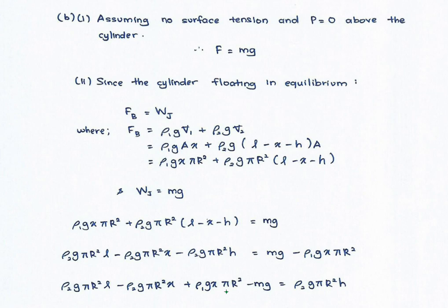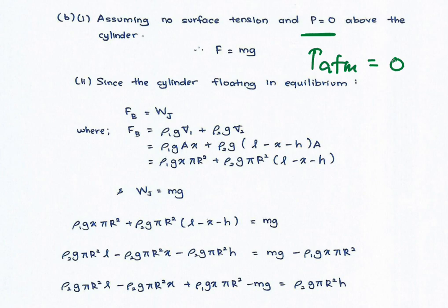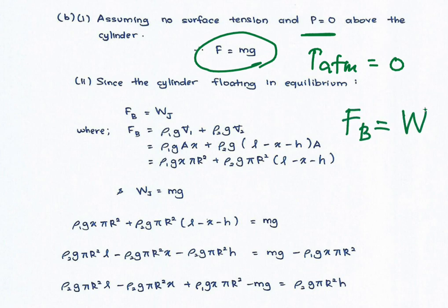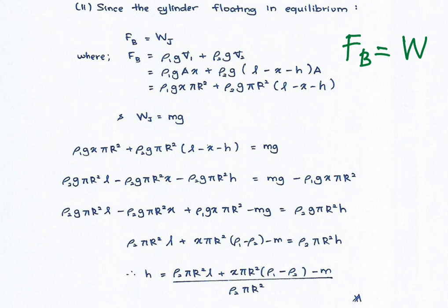This is the answer for question B. Assuming there is no surface tension and pressure above the cylinder is equal to zero — meaning the atmospheric pressure is equal to zero, so the atmospheric gas is not exerting any pressure, and there are no forces acting on the surface. We can neglect the effect of atmospheric pressure. We use the condition that buoyancy force equals weight, meaning the cylinder is floating in equilibrium, so the total buoyancy force equals the weight of the cylinder.